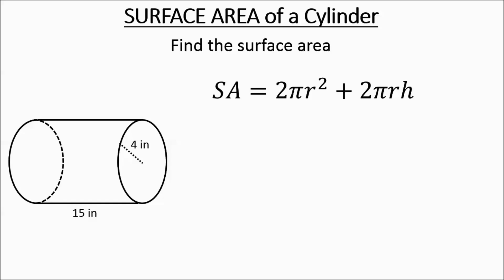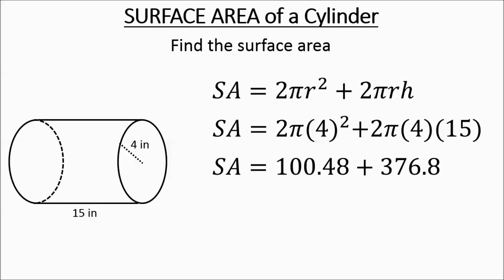So if you've paused and you're back, you'd plug in the numbers. 4 for your radius, 15 for your height. You do your 4 times 4 times 2 times 3.14 to get the first part. And then you type in 2 times 3.14 times 4 times 15 to get the second part.